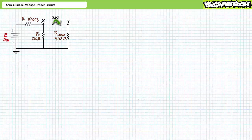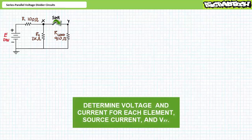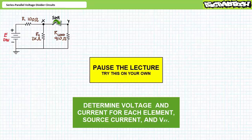Part two — switch closed. I invite you to solve for the voltage across and the current through each element in this system, and the voltage across the switch while in the closed state. By all means, pause the lecture and try this on your own.